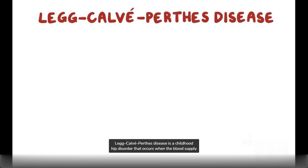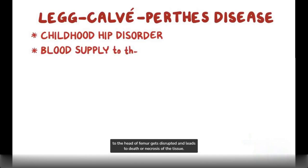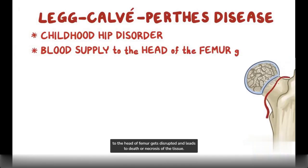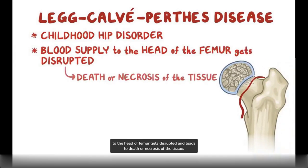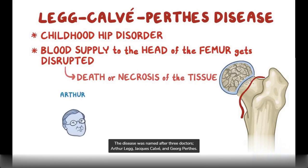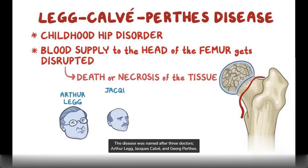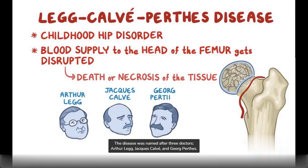Legg-Calvet-Perthes disease is a childhood hip disorder that occurs when the blood supply to the head of the femur gets disrupted and leads to death or necrosis of the tissue. The disease was named after three doctors: Arthur Legg, Jacques Calvet, and Georg Perthes.